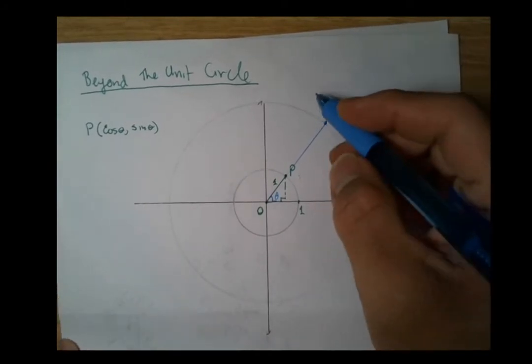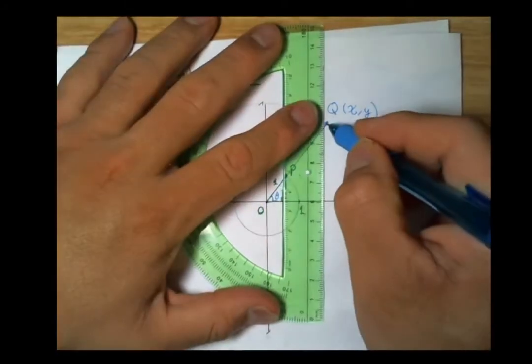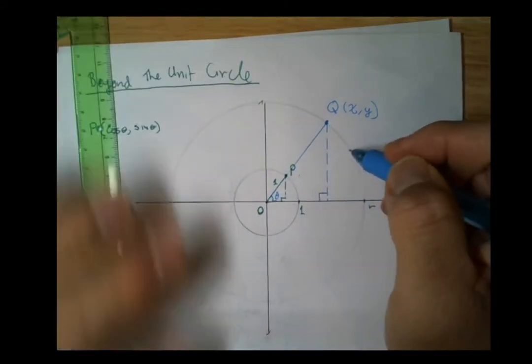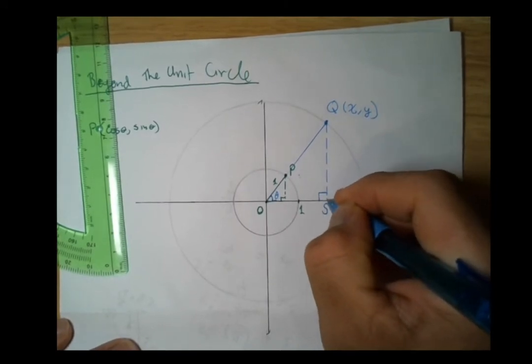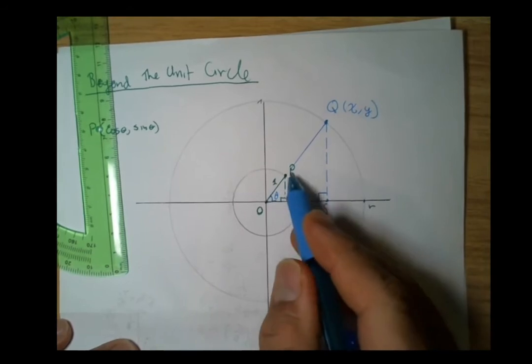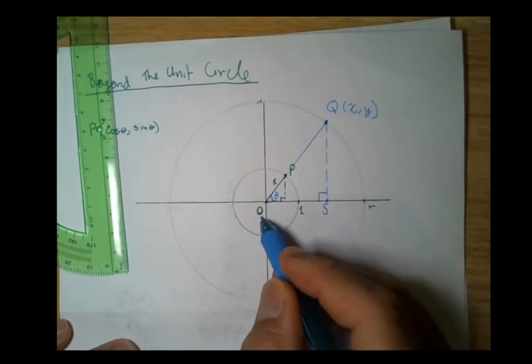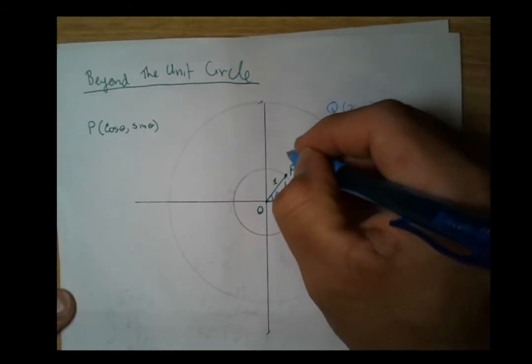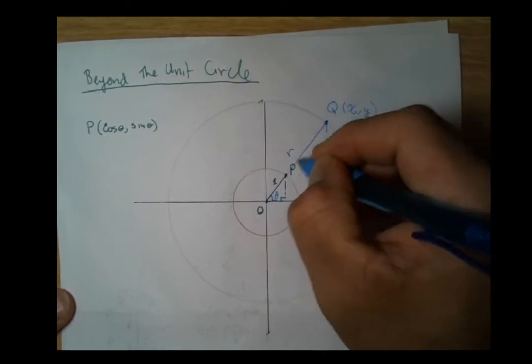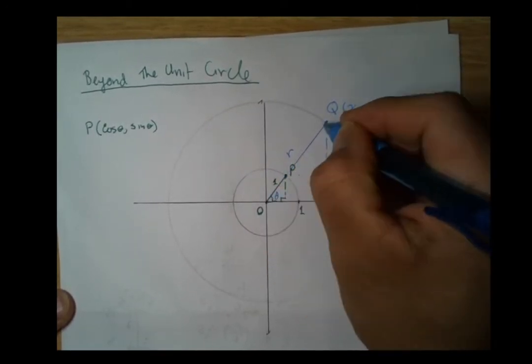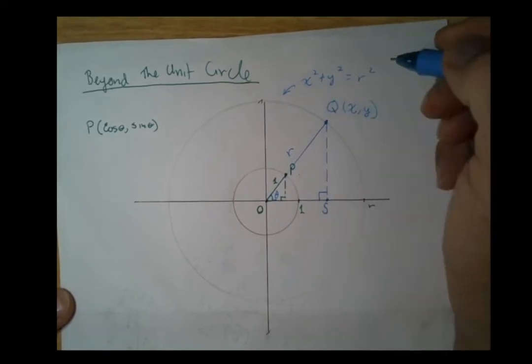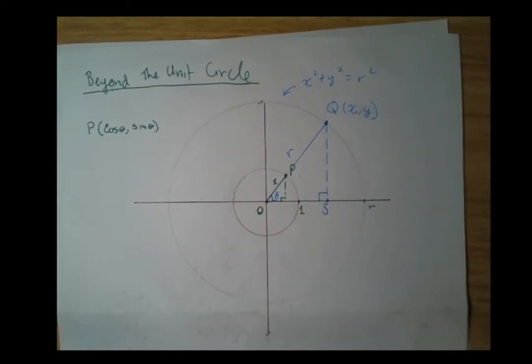Let's drop a perpendicular down here. We have another triangle. I'm going to call this point S. We have points labeled P, Q, O for the origin, and point S. Here we're going to label this distance r from the origin to point Q—a circle of radius r, where r is some fixed value.